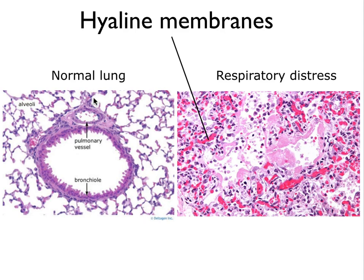Histologically, a normal lung shows nice open alveoli with very thin walls, an airway with pseudostratified epithelium, and a pulmonary vessel. In a lung of a child in respiratory distress, you can hardly see air anymore. Only a few areas retain air, and there are lots of bright pink structures — those are hyaline membranes. Lots of immune cells are visible as well, and there's very little surface available for gas exchange.